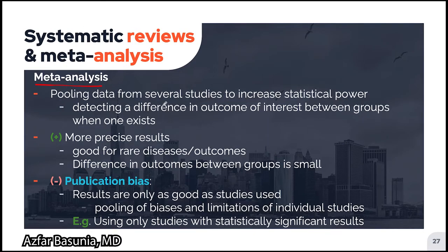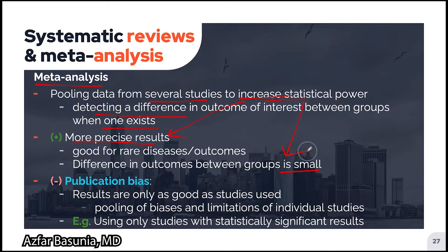In meta-analysis, data from several studies are pooled together to increase statistical power. With increased statistical power, there is a higher likelihood of detecting a difference in outcomes between groups when one exists. The major advantage comes from more precise results due to increased statistical power, which is good for studying rare diseases or when the difference in outcomes is small. Publication bias is a major drawback of meta-analysis — the results are only as good as the individual studies used. Pooling of biases and limitations of individual studies can occur, for example when only studies with statistically significant results are used.